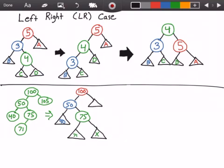And then we have 105. So this is basically how our AVL tree would look like in our left-right case above.